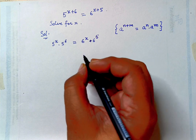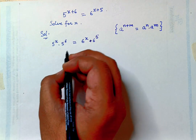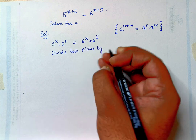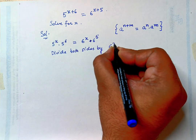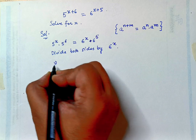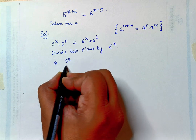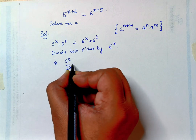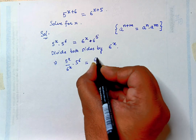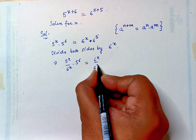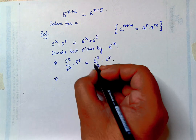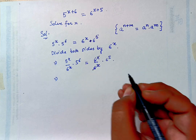So we can divide both sides by 6 raised to power x. We will get 5 raised to power x upon 6 raised to power x, into 5 raised to power 6, is equal to 6 raised to power x upon 6 raised to power x, into 6 raised to power 5. This will cancel out.